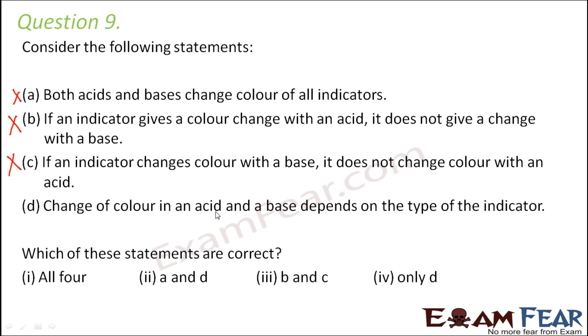Change of color in an acid and a base depends on the type of the indicator. Well this is true because if you see the change of color depends on the indicator. For example if you think of the indicator as turmeric, so for turmeric there is no change in color in acid. But if you change the indicator, for example if you make it litmus paper so there is a change in color in acid. If you think of china rose there is a change in color in acid and here the color becomes dark pink. So how the color, whether the color will change or not, how the color will change, it completely depends upon each type of indicator. So this one is correct.